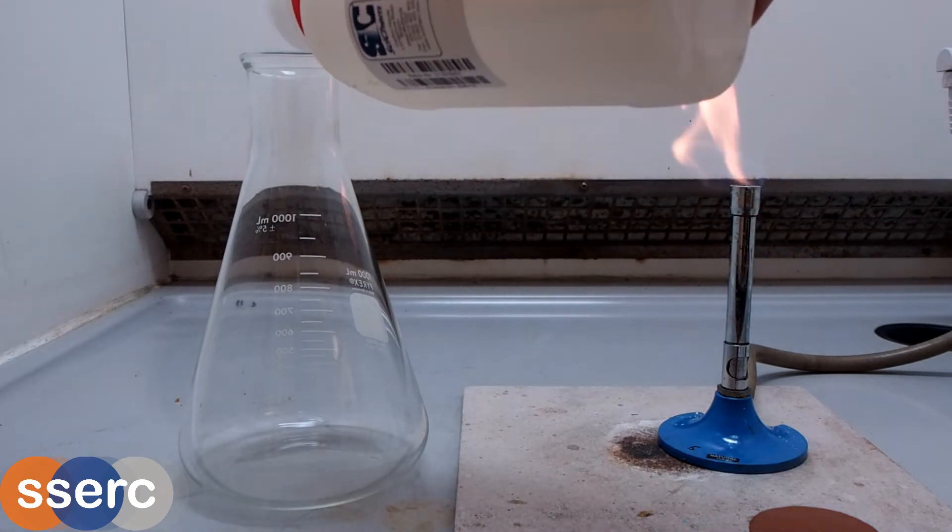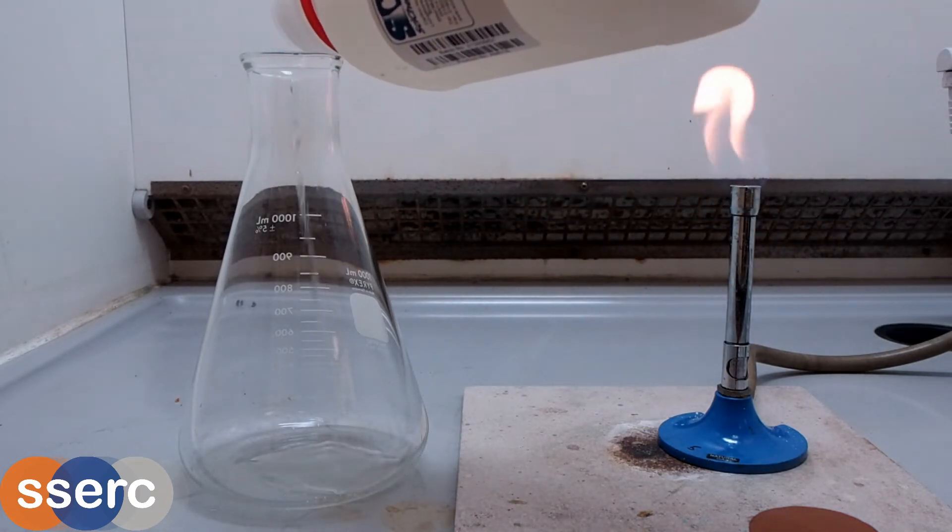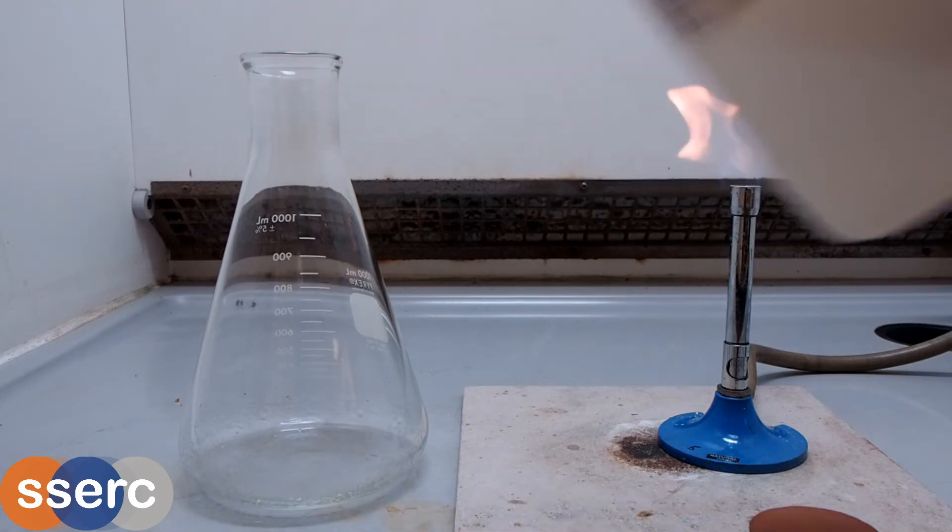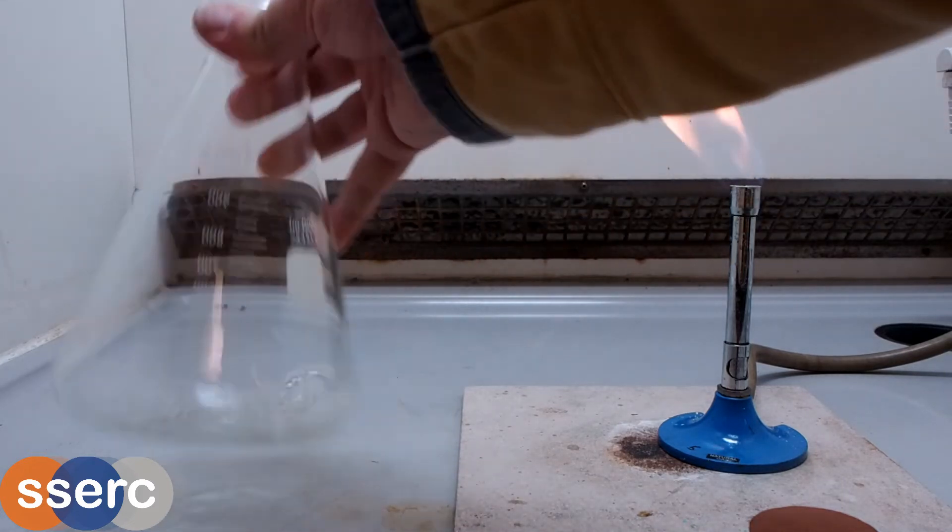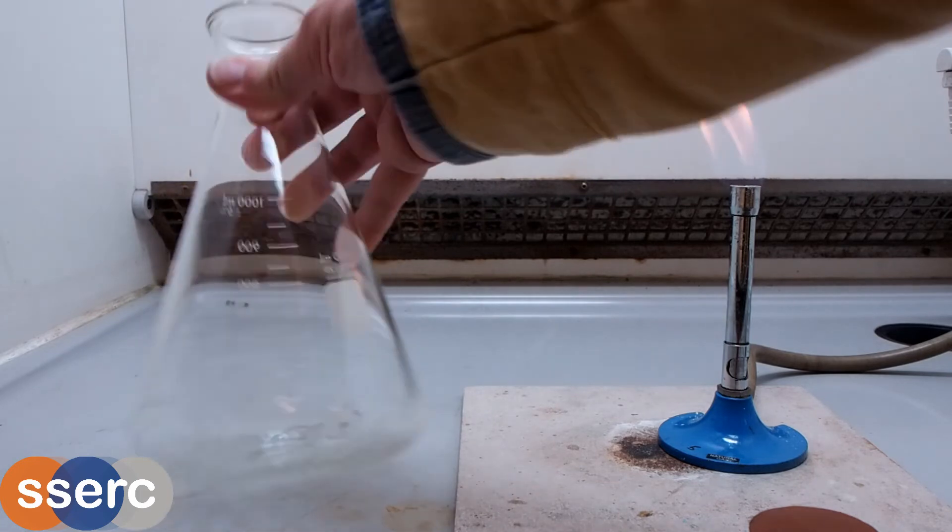For the demonstration, take a flask, as large a one as you can find, and pour a little concentrated ammonia into the bottom. Swirl it around to fill it with fumes of ammonia.